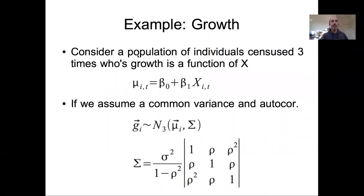The example I'm going to use to show how to implement autoregressive models is to imagine that I'm interested in the relationship between growth and some covariate X. I'll consider a population of individuals, and to keep things simple I'm going to assume they are censused three times. Growth is a function of X, so I'll write down my process model: mu, the predicted growth rate, depends on an intercept, a slope, and that covariate X. Mu varies by individual (rows) and time (columns).